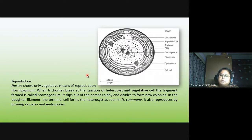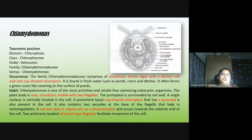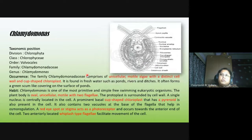Nostoc also produces akinetes and endospores. Akinetes are resting spores. Endospores are also found in Nostoc, as in bacteria. This is all about Nostoc.